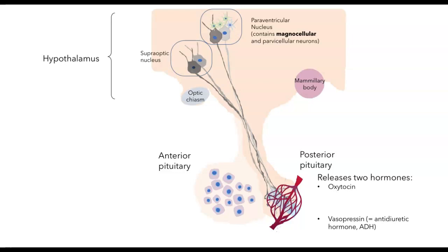What are their functions? Oxytocin plays a role in parturition — that's the process of childbirth — so initiating uterine contractions and birthing itself. It also plays a role in lactation and maternal behavior, appetite regulation and social recognition, and in males and sexual behavior. Vasopressin functions in fluid balance and in blood pressure.